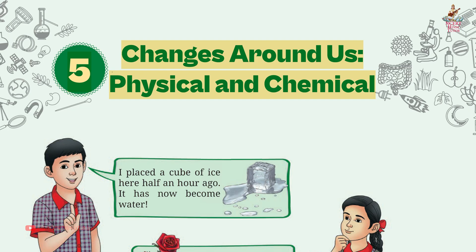So friends, we have completed short notes and summary from Chapter 5: Changes Around Us — Physical and Chemical. We will do question answers of this chapter in a separate video. If you like the video, kindly like it and share it with your friends. Also subscribe to my channel. We will meet in the next video. Thank you for watching.